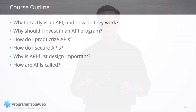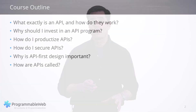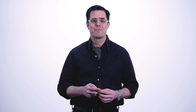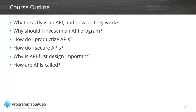So just again to review what the series is covering in a broad brush: we're talking about what exactly an API is and how they work. We're talking about why you should invest in an API program whether you're a developer or an API provider, how to productize APIs — a very important issue, you want to treat them like products — and how to secure them, because generally speaking APIs go on the internet and internet security is very important for everybody.